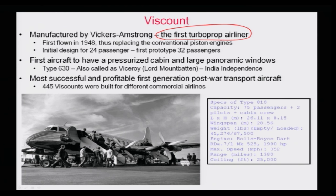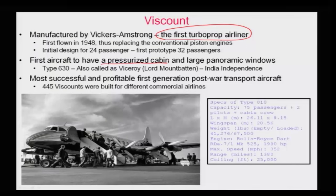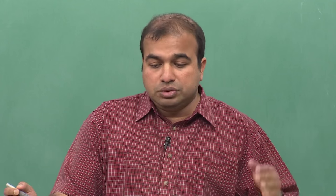The three major forerunners introduced by this aircraft are: first, the pressurized cabin. Earlier, aircraft cabins were never pressurized, so when flying at altitude, the pressure difference would hurt your ears. To avoid that, the aircraft cabin started being pressurized, and this was first achieved by this aircraft. Also, most old aircraft had no windows, but this was the aircraft that came with large panoramic windows, so you can sit inside and see the external views, reducing travel fatigue.